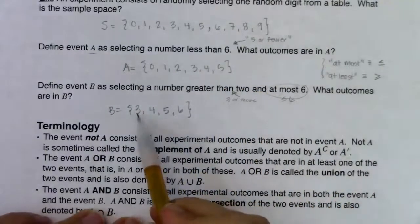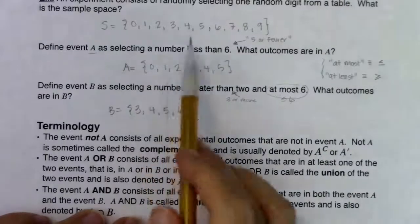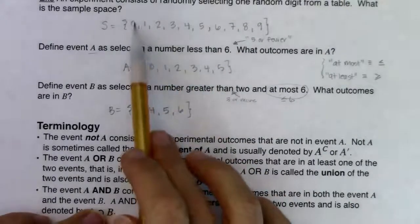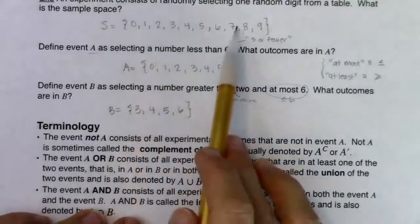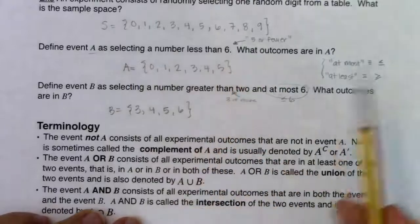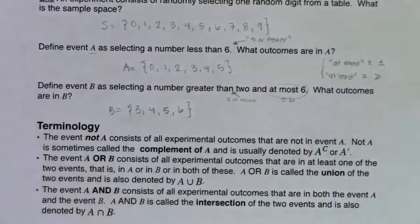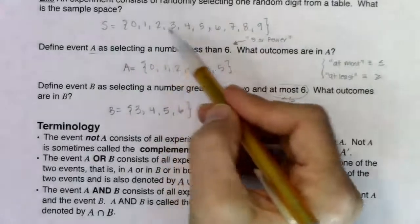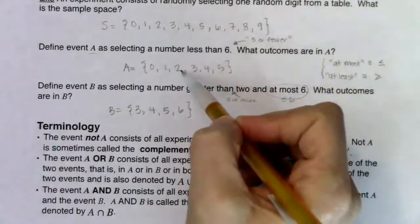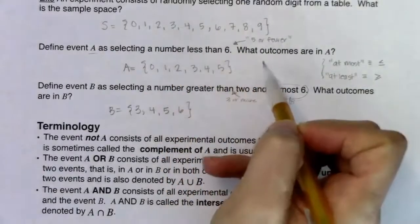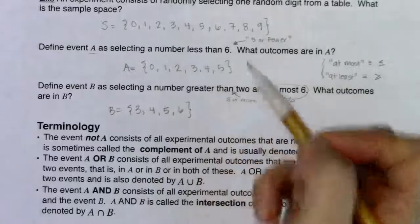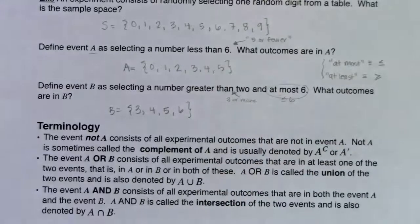Similarly, three, four, five, six were in B, so zero, one, two, seven, eight, nine are not in B — they are in B complement. For every outcome in your sample space, you're either in an event or you're in its complement. It's binary — you fit into one of those two.